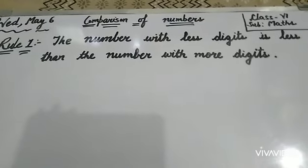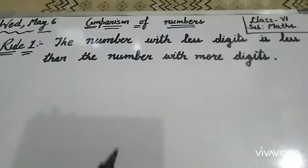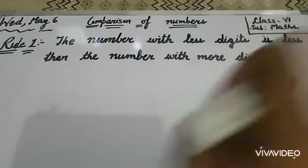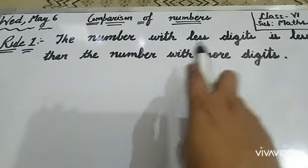So the first rule is that the number with less digits is less than the number with more digits. Less digits means the one with fewer digits is less than the number with more digits.